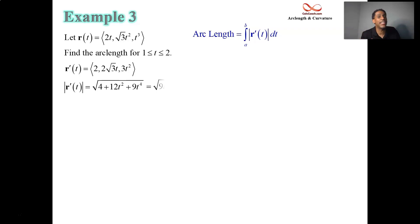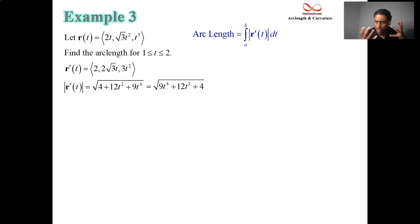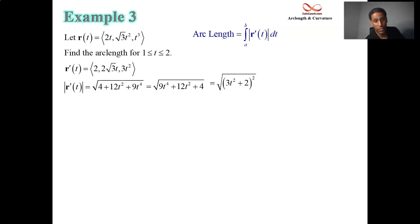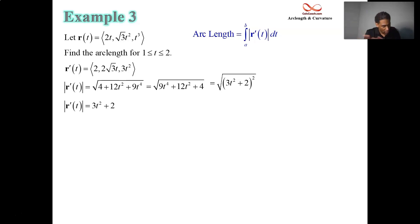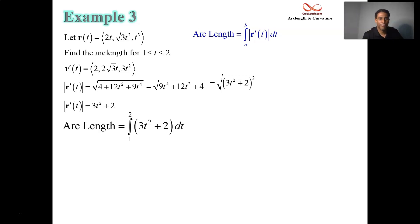We need to recognize this expression can be simplified. Rearranging terms in decreasing order and treating it like a quadratic — thinking of w as t squared — we see that 9w squared plus 12w plus 4 factors as a perfect square: the quantity 3t squared plus 2, all squared. Since it's under a square root, the square root and square cancel. Your speed is governed by the formula 3t squared plus 2. Integrating from 1 to 2: the antiderivative is t cubed plus 2t.